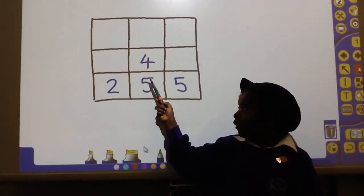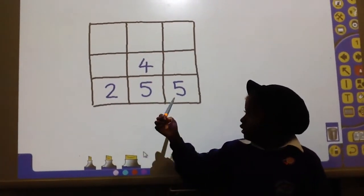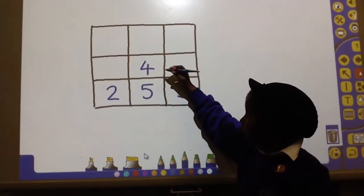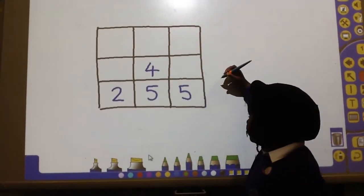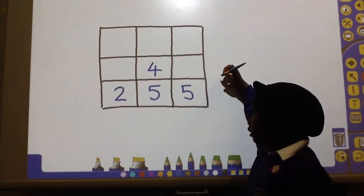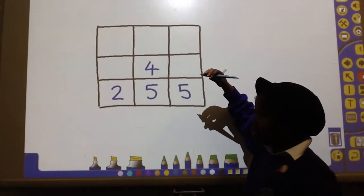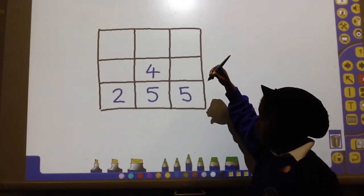So you could do 5 add 4 equals 9, and then 9 add something equals 12. 9 add 3 equals 12, so you write it in.